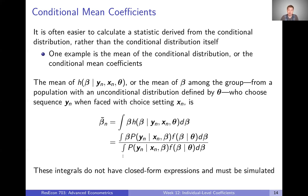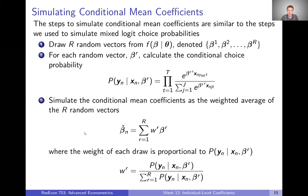Unfortunately, just like with the mixed logit model, these integrals don't have closed form expressions and so they have to be simulated. To simulate a conditional mean coefficient, it's going to be pretty similar to how we simulated a mixed logit choice probability. First, we need to draw random vectors from our population — beta superscript 1, superscript 2, all the way up to superscript R.